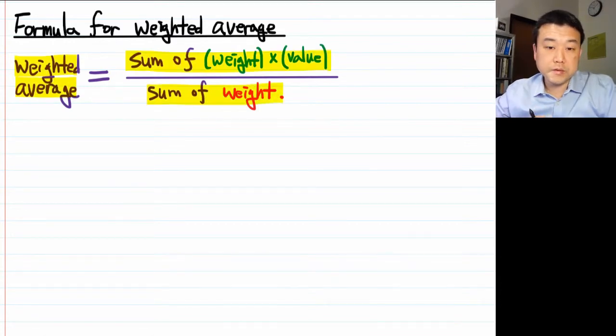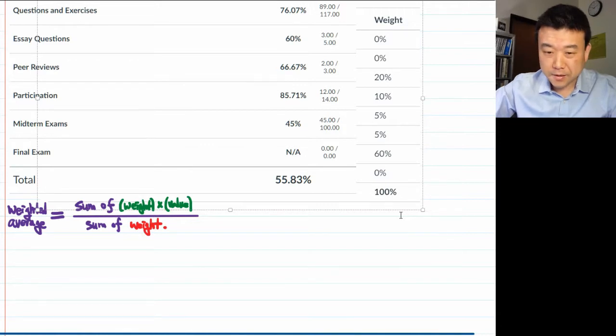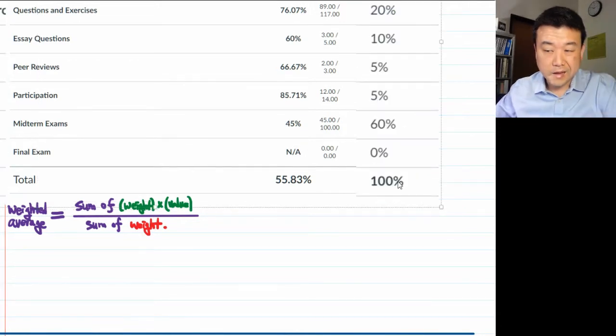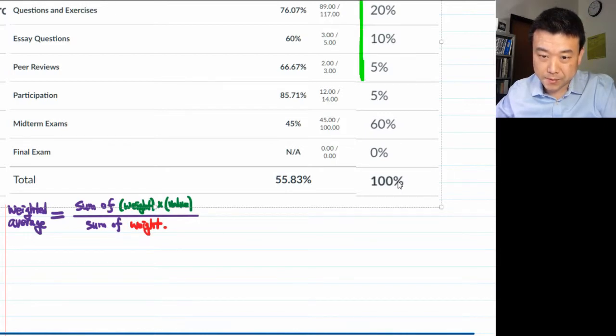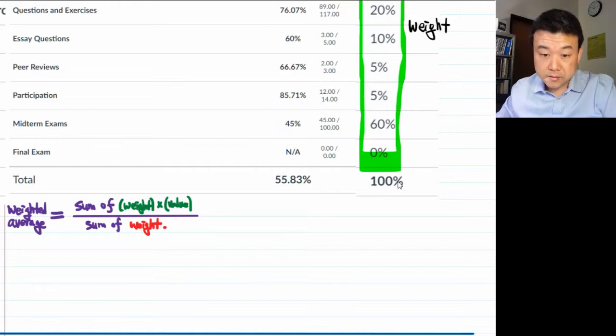If all you want to do is calculate your own what-if score, then this is what you would use. Let me demonstrate with an example. Let me copy these weights up to the first screenshot and kind of line them up so that they match. All right, this roughly matches. The word weight is not on the screen anymore, but please remember that this green thing here, this is the weight. So applying this formula, let's see if I can calculate this 55.83% just to verify that the formula works the way it is supposed to.